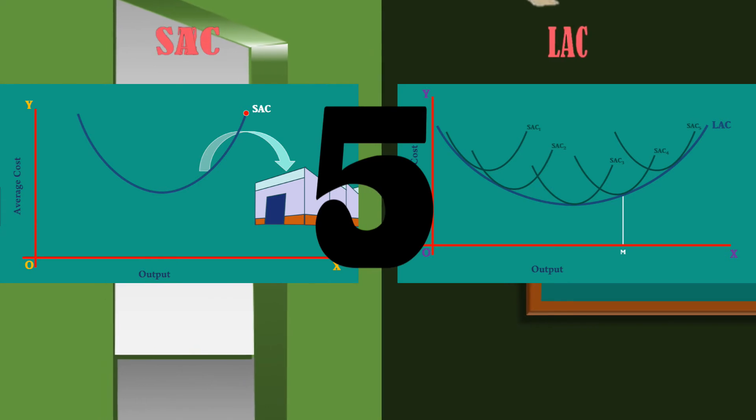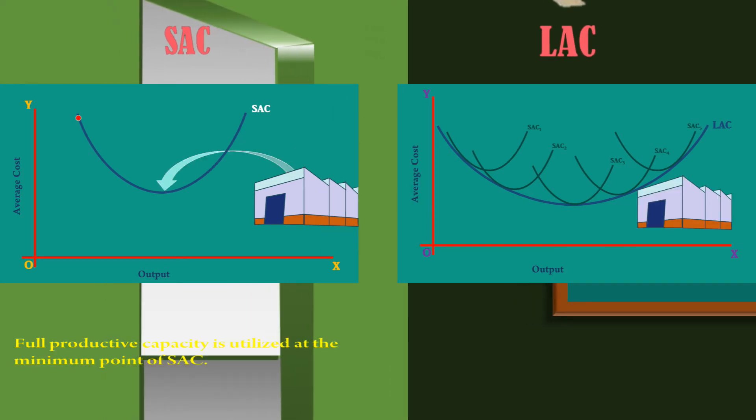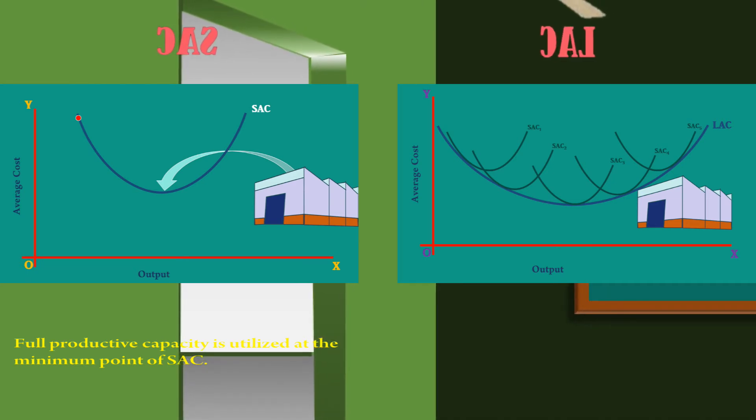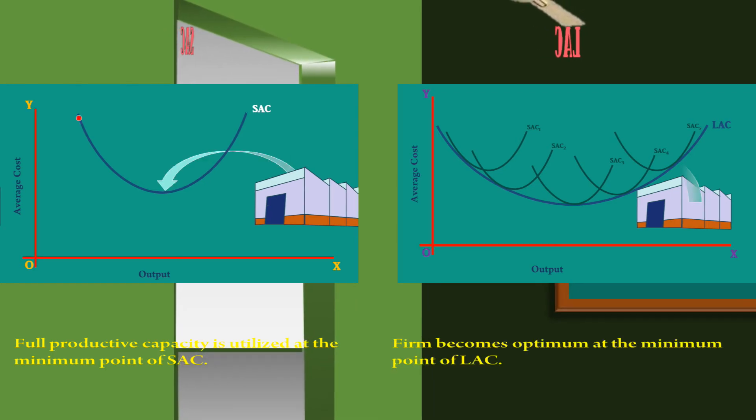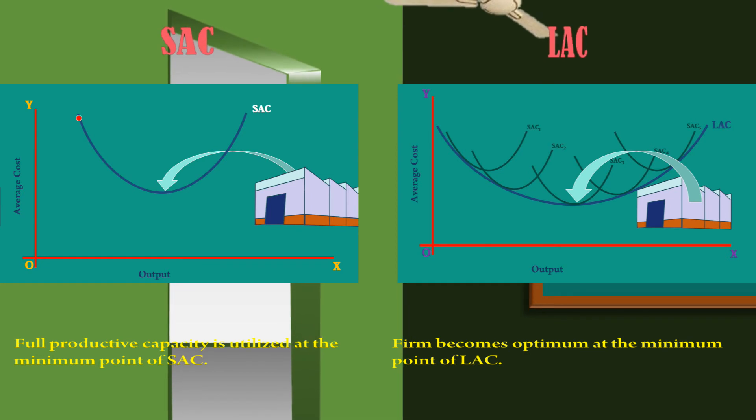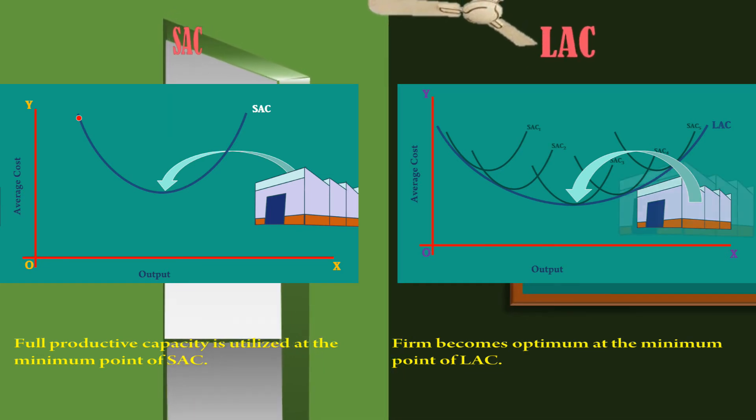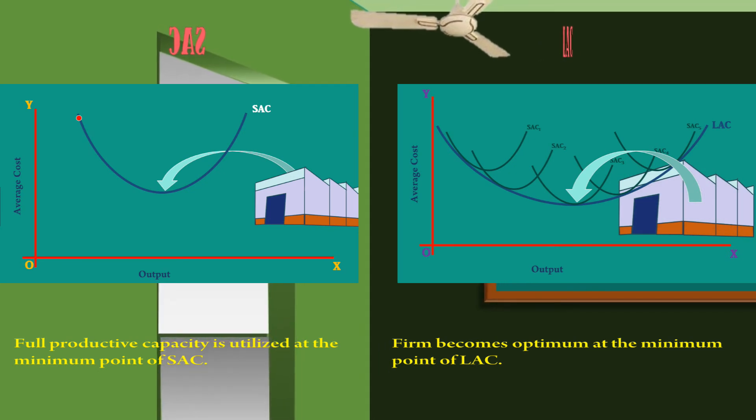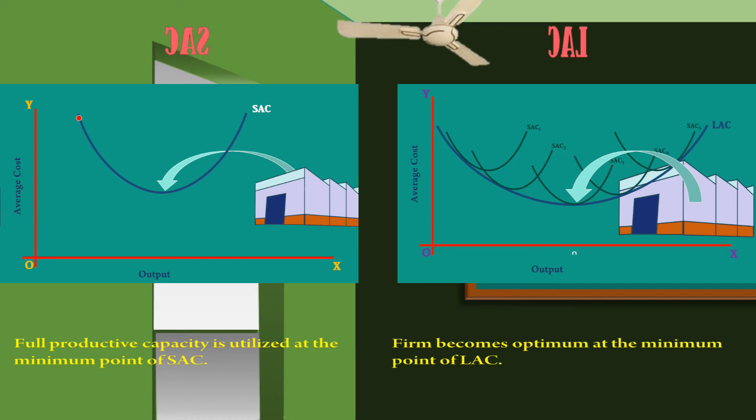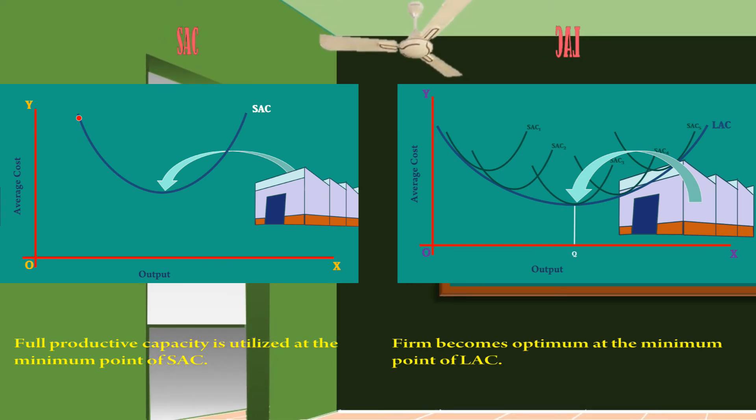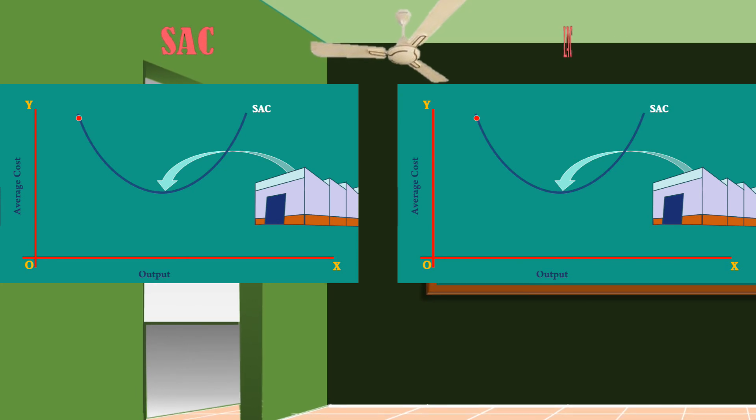5. When a firm operates at the minimum point of the plant curve, it utilizes its full capacity. When a firm operates at the minimum point of the long run average cost curve, the firm becomes optimum. It utilizes the full capacity of the plant. The output is optimum because it is produced at the least cost. Thank you.